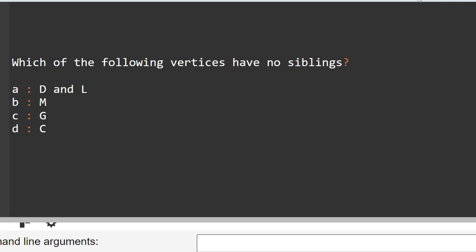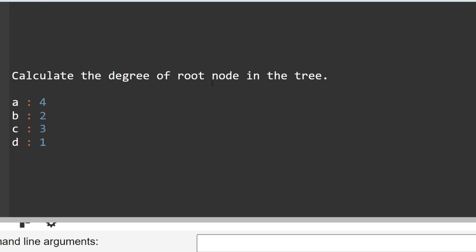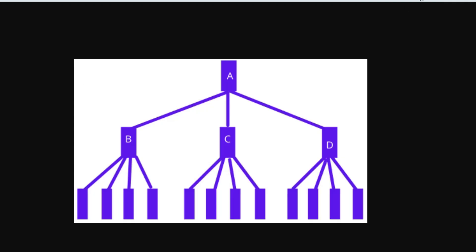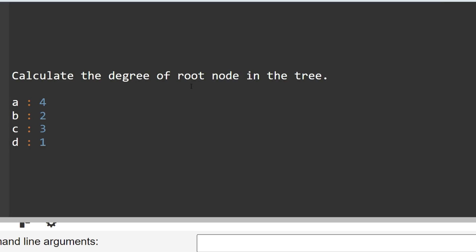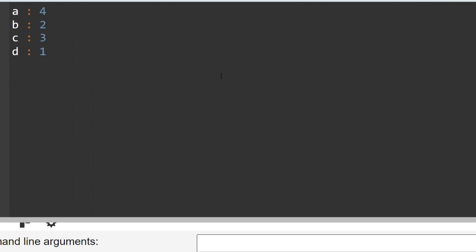The next question: calculate the degree of the root node in the tree. To calculate the degree of the root node, you have to count its edges. The root node has 1, 2, and 3 edges — so the degree is 3. Option C is the correct answer.